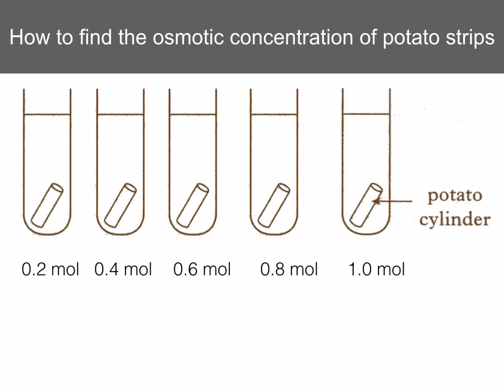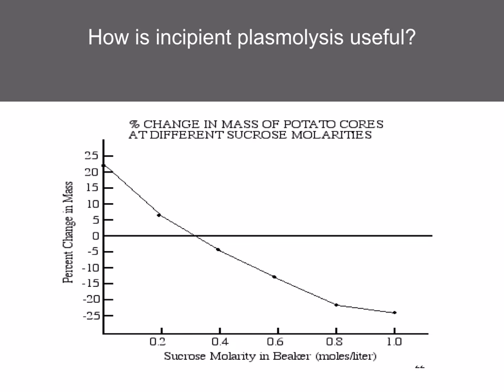How do we find the osmotic concentration of potato strips? If you put potato cylinders or strips into different solutions of varying sucrose concentration, then weigh them after a certain time period, you can calculate the percentage change in mass and plot a graph against the concentration of the external solution. The percentage change in mass decreases as concentration increases. The concentration of sucrose at which there's no change in mass is the same as the concentration within the potato — in other words, the water potential of the external solution equals the water potential of the cell.